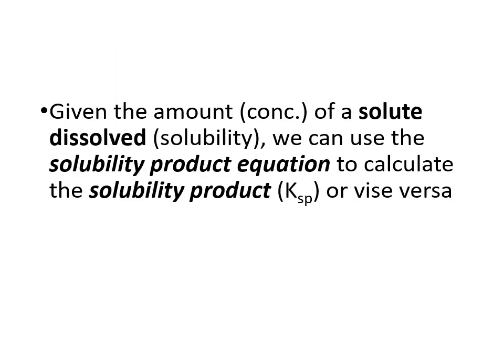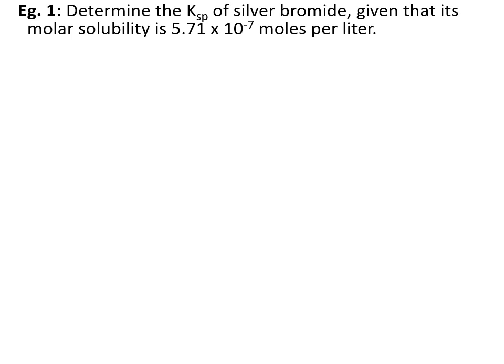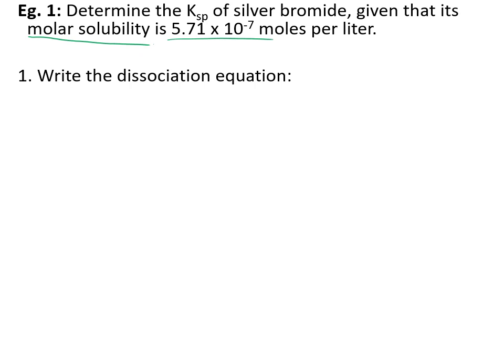Given the molar concentration of a solute dissolved — its molar solubility — we can use the solubility product constant to calculate the Ksp, or vice versa. We can use Ksp to find ion concentrations, or ion concentrations to find Ksp. Let's determine the Ksp of silver bromide given that it has a molar solubility of 5.71 × 10⁻⁷ mol/L. First, set up the dissociation equation — solid on the left — as an equilibrium expression, dissolving to the point of saturation.